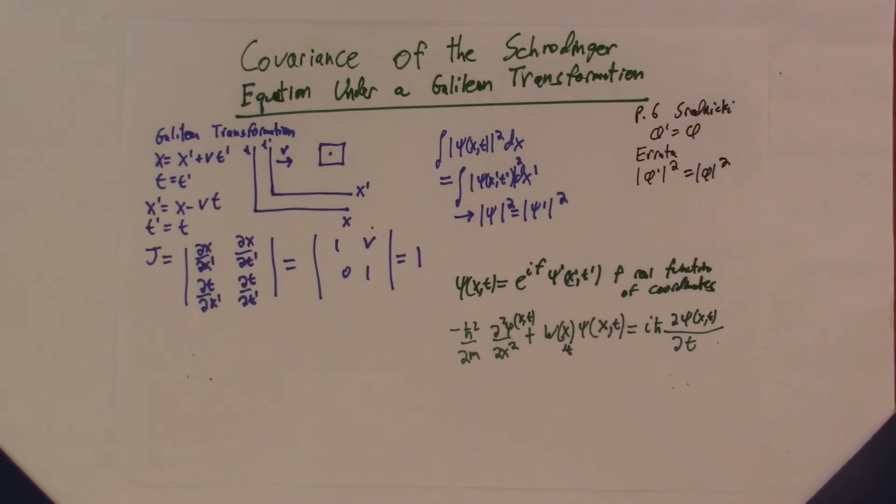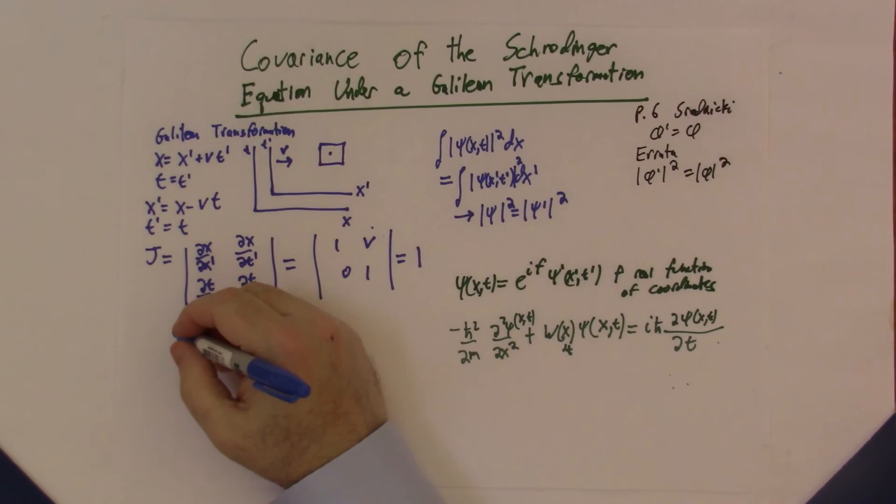So what we're going to do is substitute ψ in terms of ψ' in this equation, have the derivatives in terms of the new coordinates, and see if we get the same equation, or at least see what happens. To do this, we need to do the partial derivatives. Let's work that right out. They're very simple.